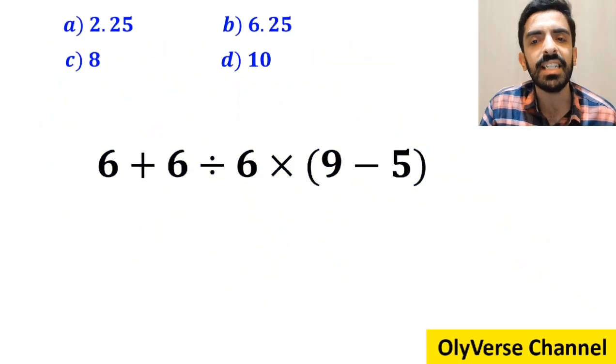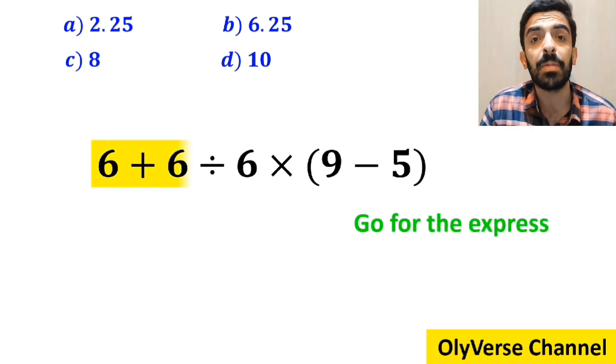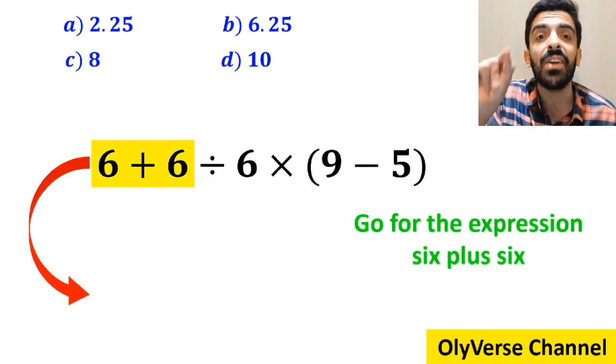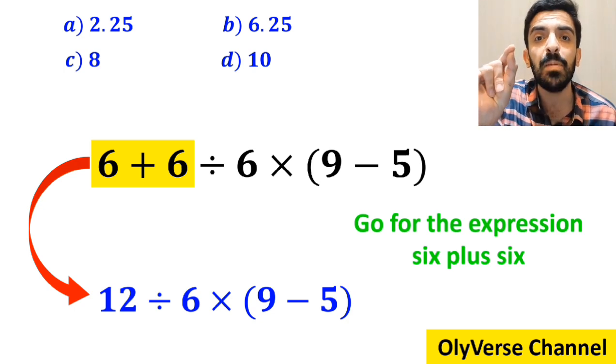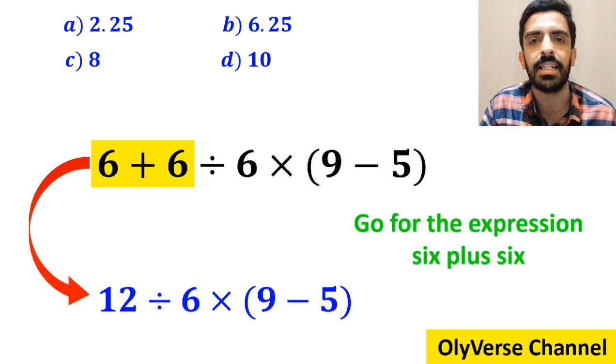Many people, when solving this question, first go for the expression 6 plus 6 and write this expression as 12 divided by 6 times (9 minus 5).